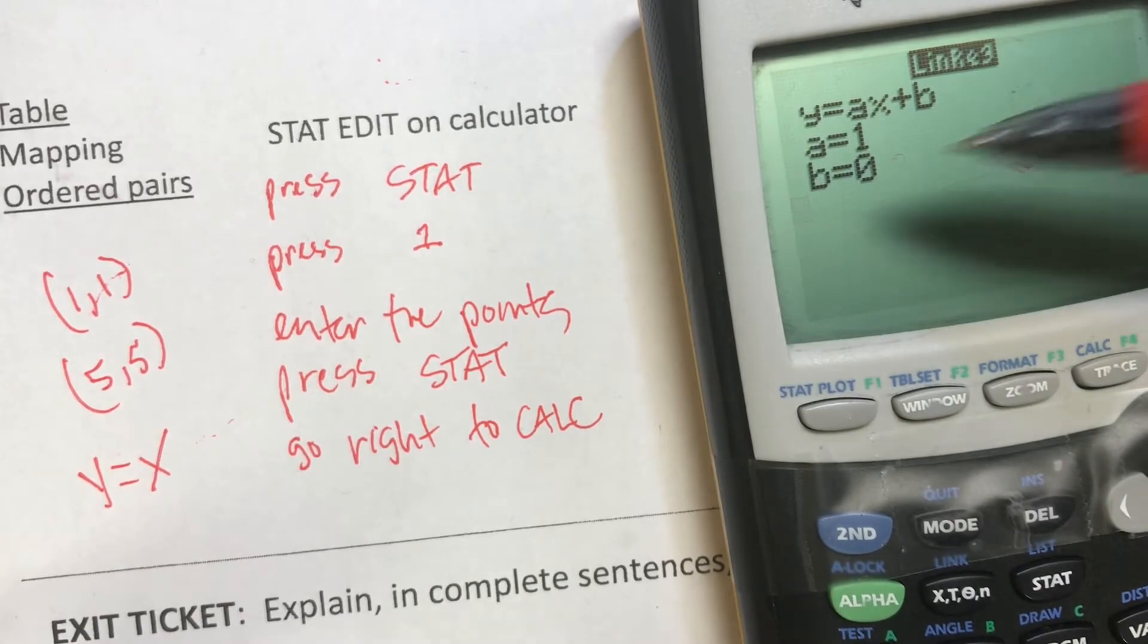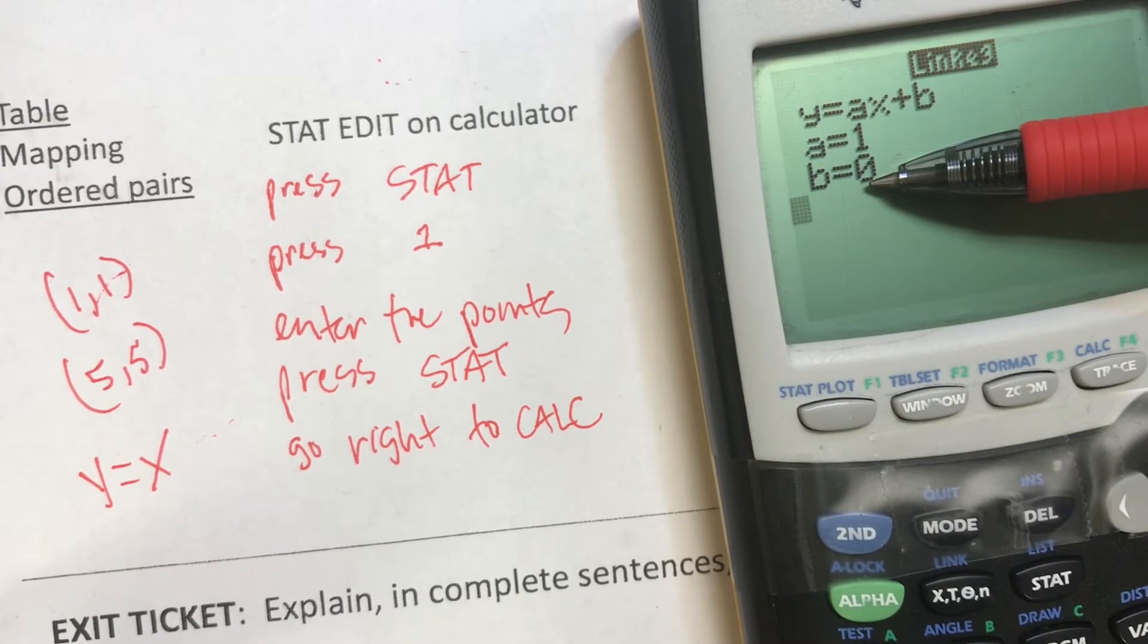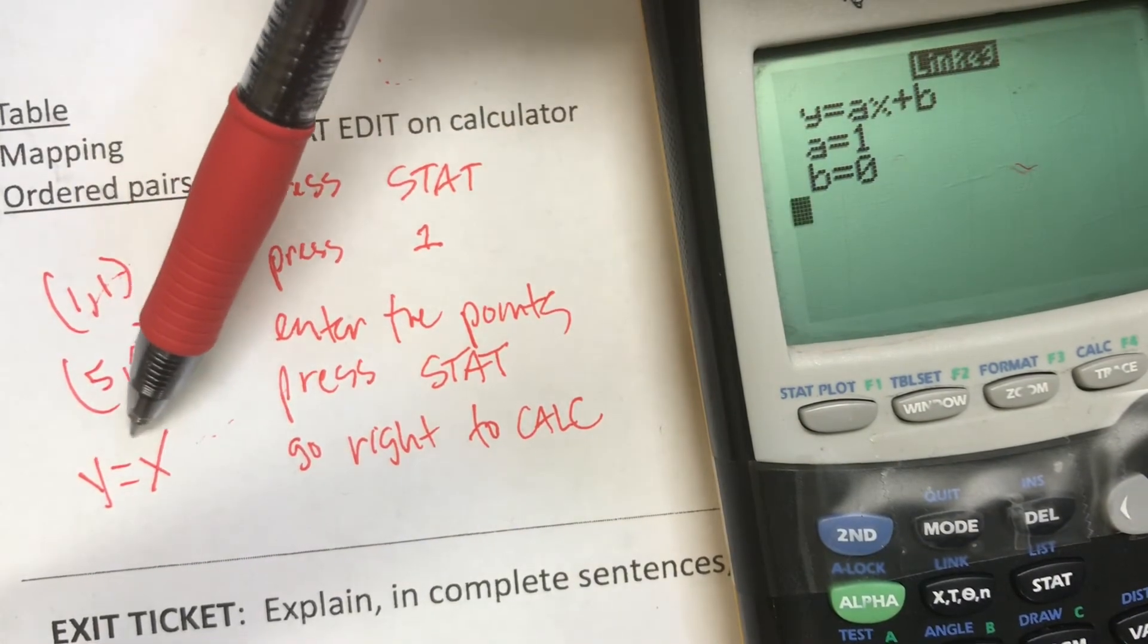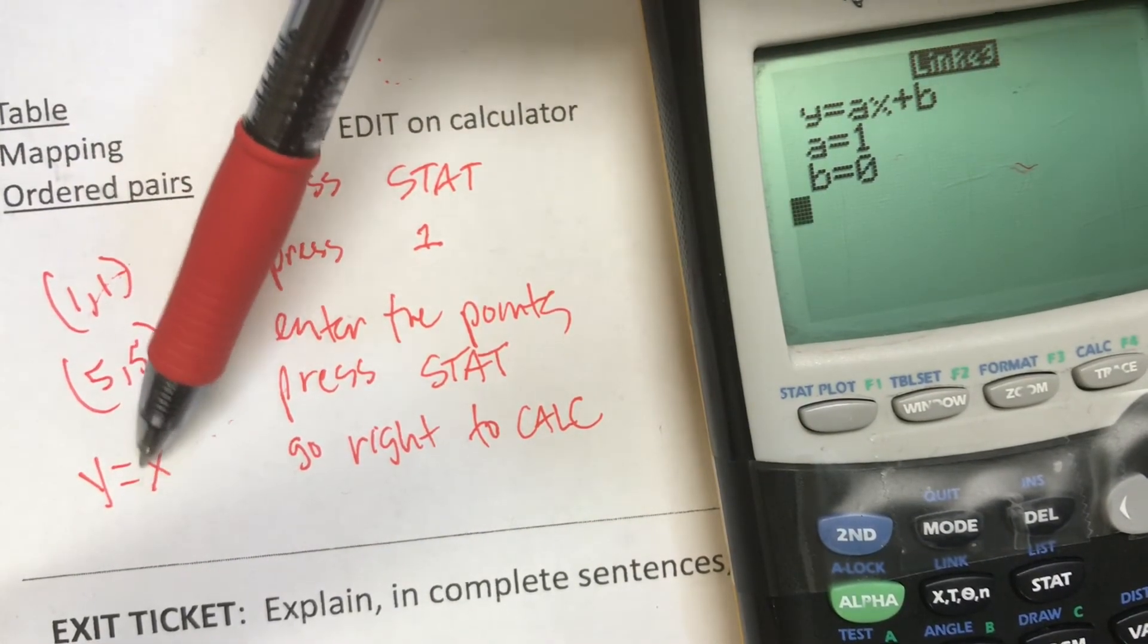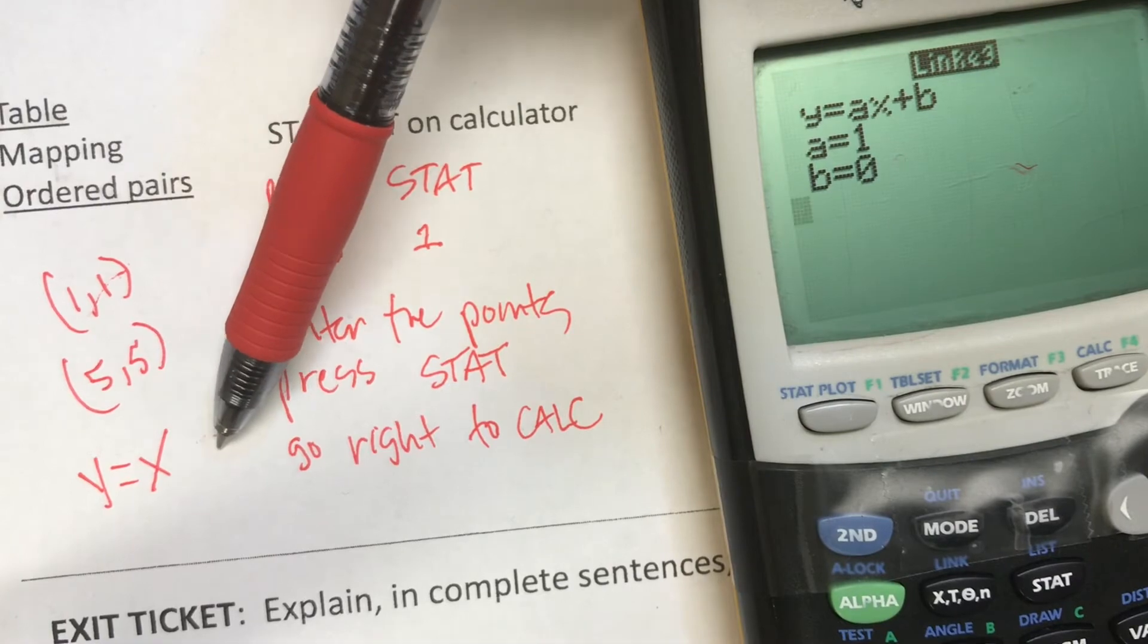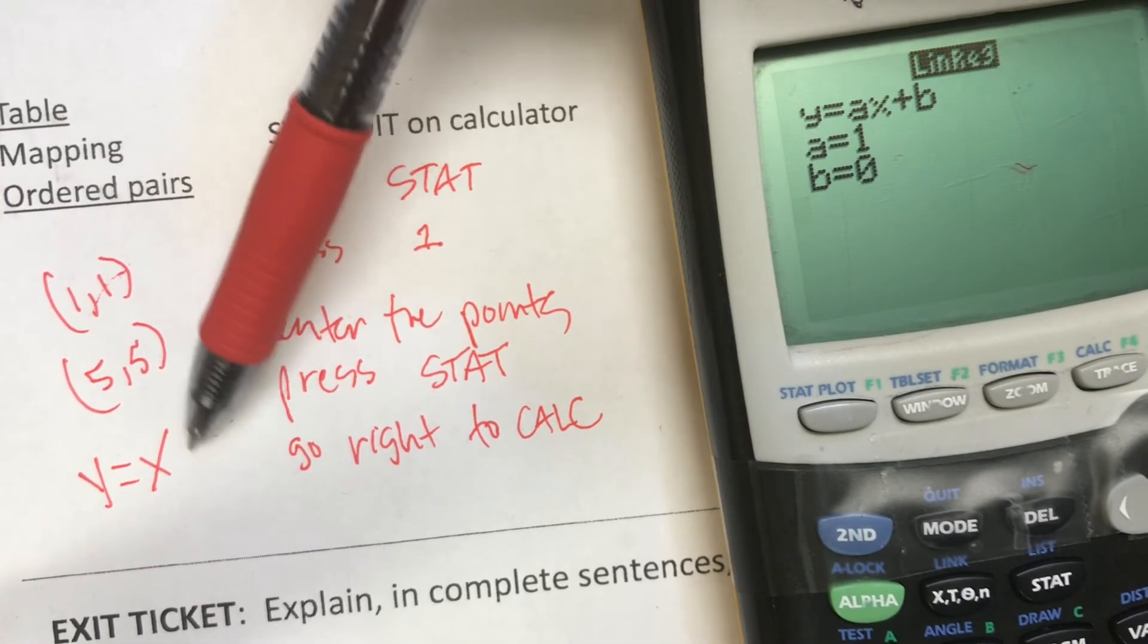And it tells me what my slope and my y-intercept are, which is exactly what we had talked about just a minute ago. The slope is 1 because there's 1x. The y-intercept is 0 because there's nothing added or subtracted afterwards.